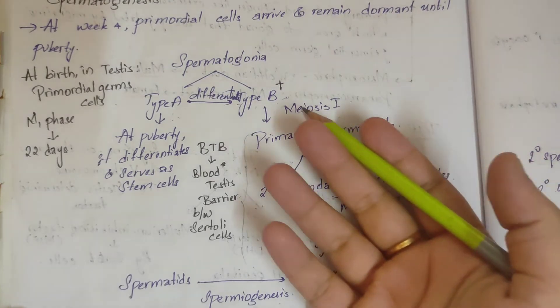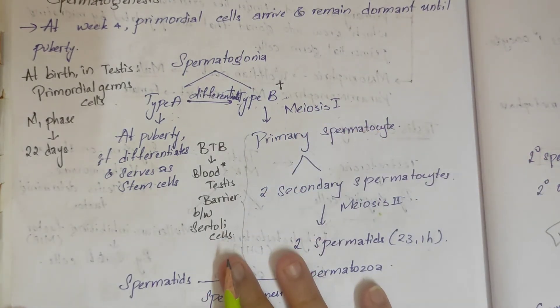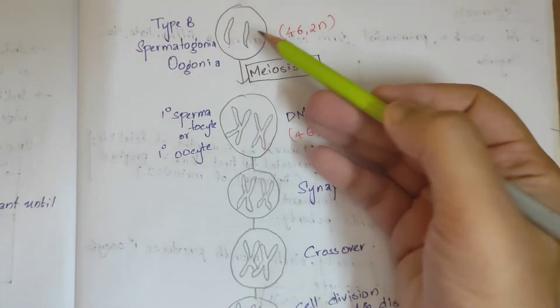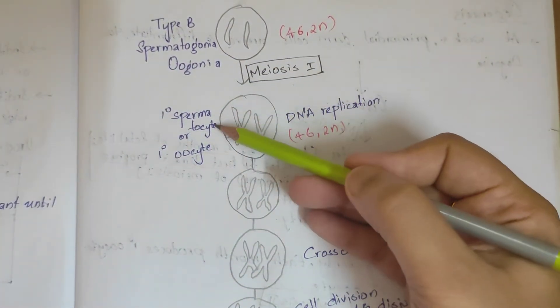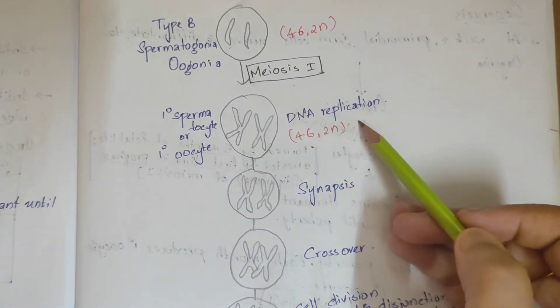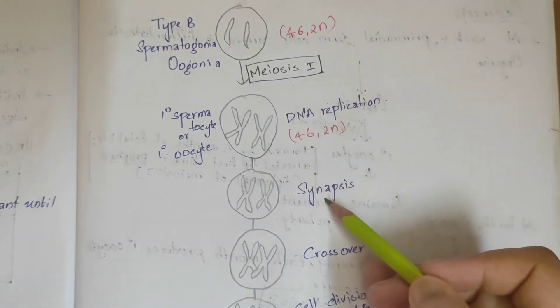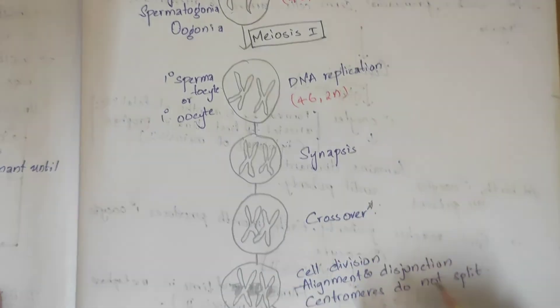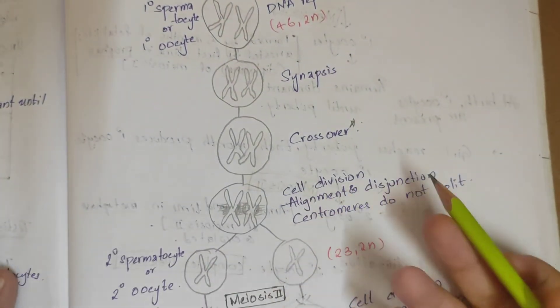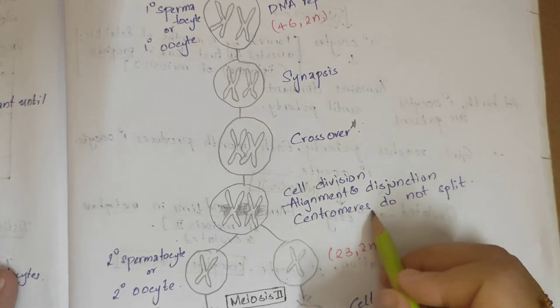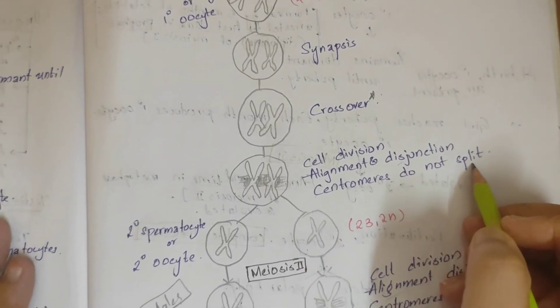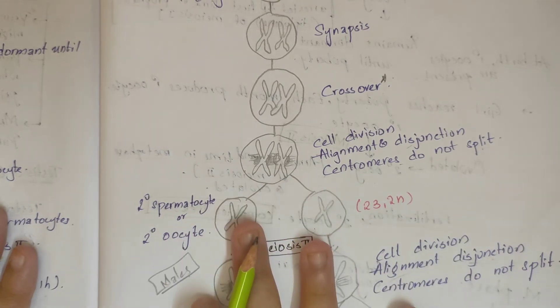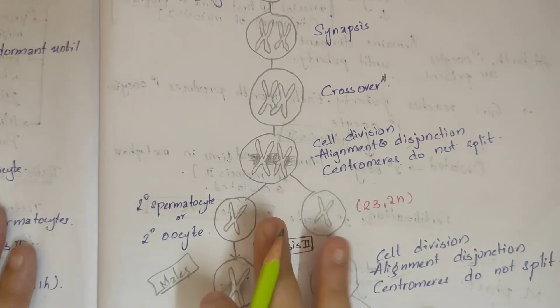As we said, spermatogonia in meiosis 1 forms spermatocytes. DNA replication occurs, synapsis occurs, and crossover - which is very important - occurs. Then cell division, alignment, and disjunction occur, where the centromeres do not split. This forms the secondary spermatocyte.